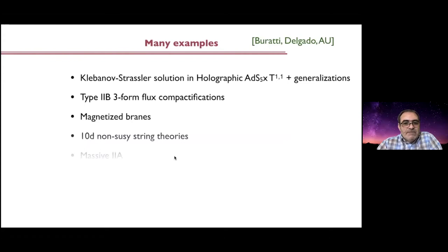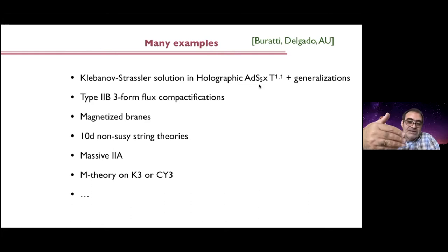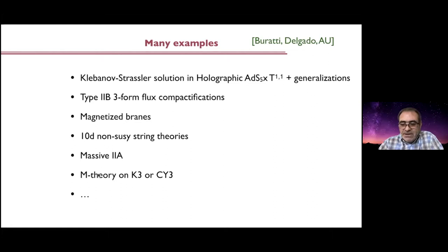For instance, the Klebanov-Strassler solution in the holographic compactification on AdS₅ × T^{1,1} with three-form fluxes can be regarded as a wall of nothing in this compactification. The three-form flux triggers the tadpole, you have a running solution — corresponding holographically to running toward the infrared — until you hit a singularity resolved by the Klebanov-Strassler growth of the finite-size S³. Similar phenomena appear in Type IIB flux compactifications with NSNS and Ramond-Ramond three-form fluxes, magnetized brane models, 10-dimensional non-supersymmetric string theories like the USp(32) and non-supersymmetric theory, in massive Type IIA, and in M-theory on K3 or Calabi-Yau compactifications.